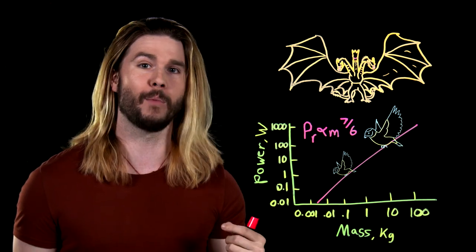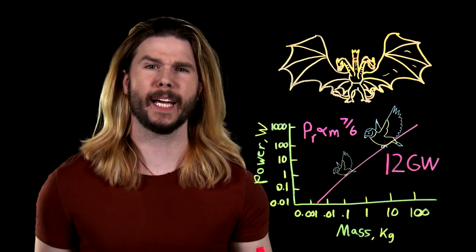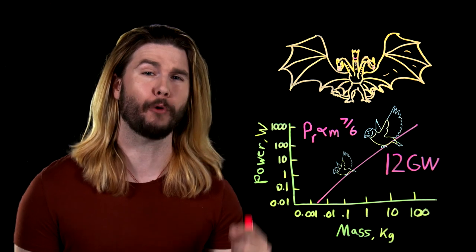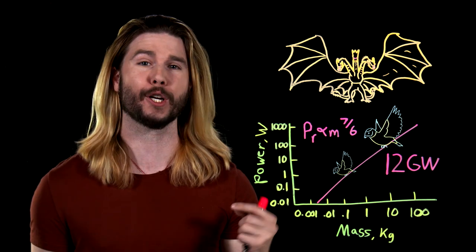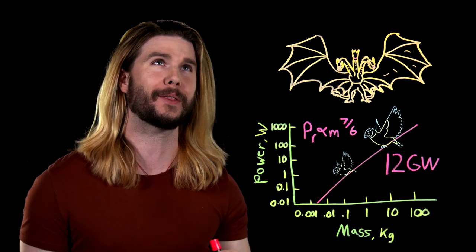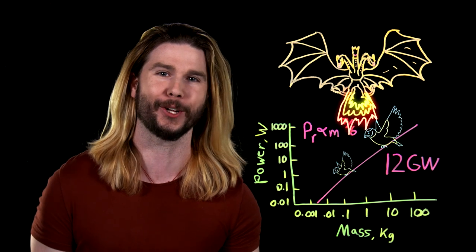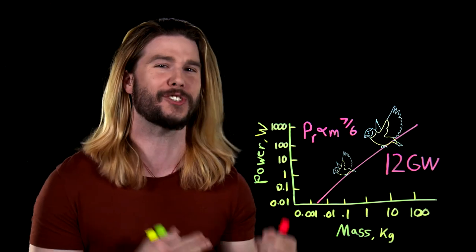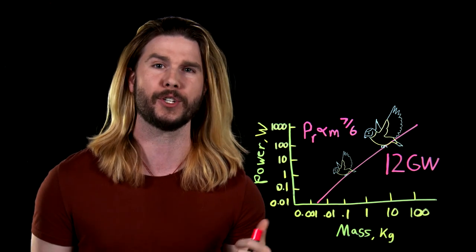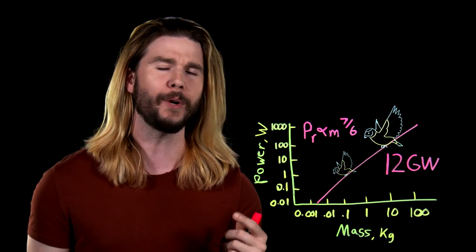So power required from flight muscles is proportional to how many times more massive a bird is to the power of seven-six. That's just how the math works out. So for example, if a bird was twice as heavy as another bird, it would require two to the seven-six times more flight power. Ghidorah, though, is a lot more than twice as heavy as anything. If we apply this scaling relationship to Ghidorah's tens of thousands of tons, we get a power requirement for its flight muscles just to get off the ground of 12 billion watts. 12 gigawatts, which is just about the same as how much power it takes for a space shuttle to get into space.